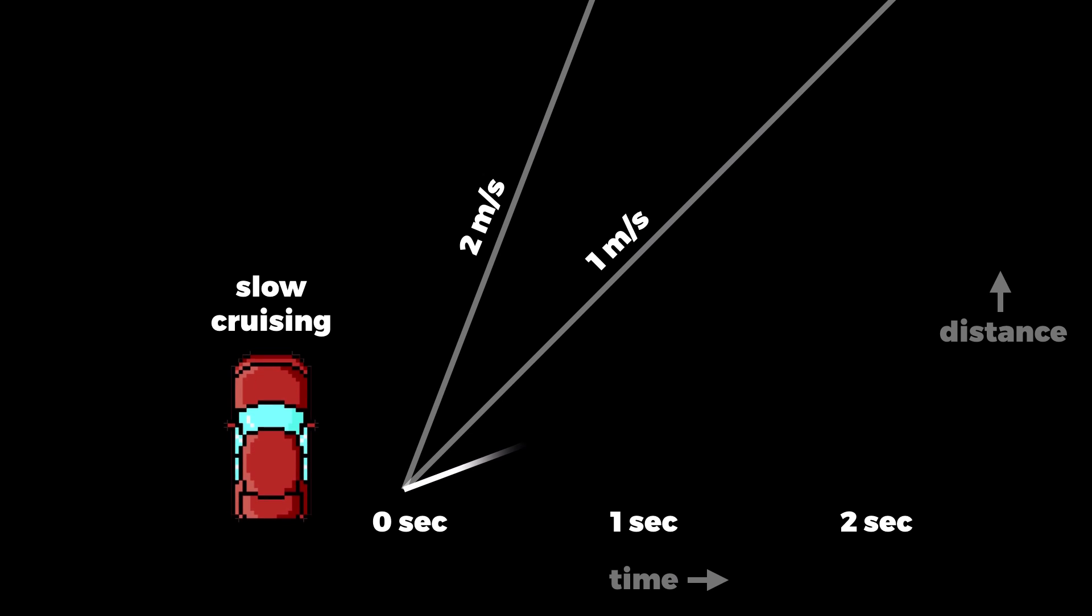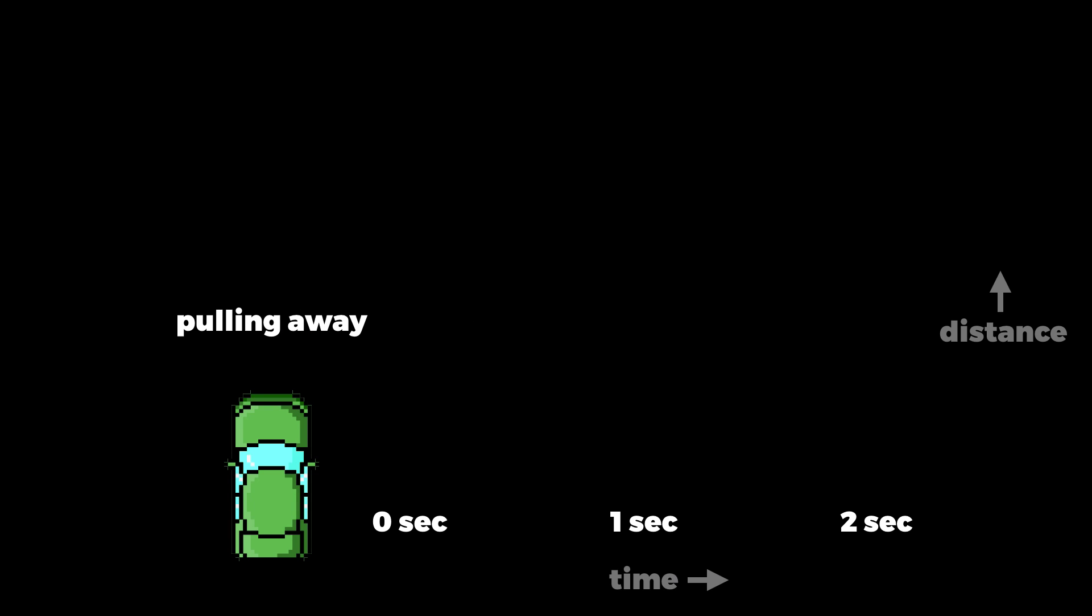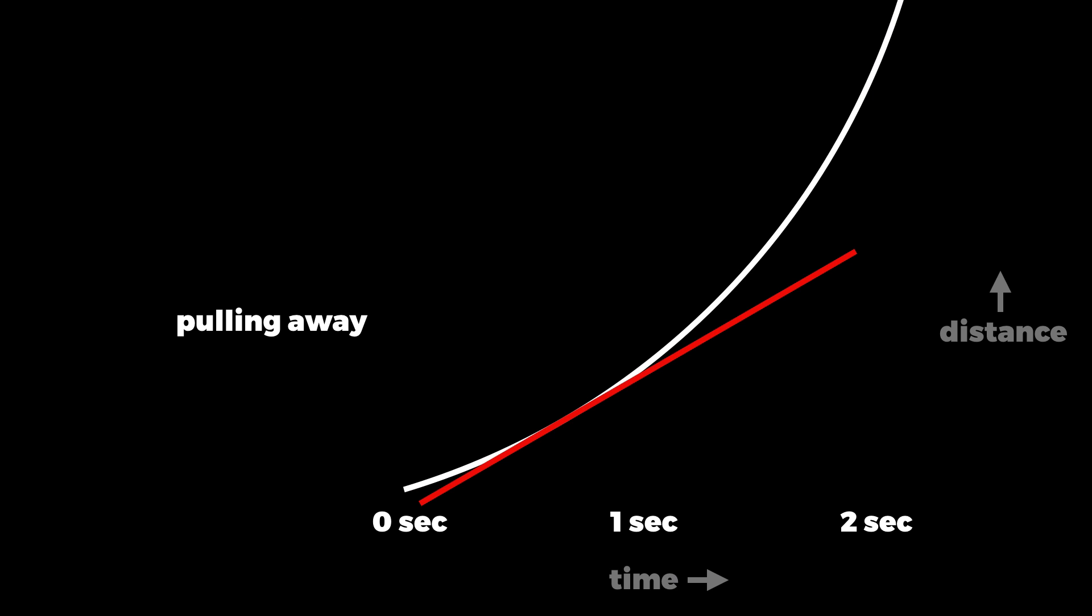And if it travels half as fast, we get a less steep line, say half a metre per second. So steeper means faster, shallower means slower. The speed of the green car changes over time. Initially its speed is zero, but then the curve gets steeper, and then even steeper as its speed increases.